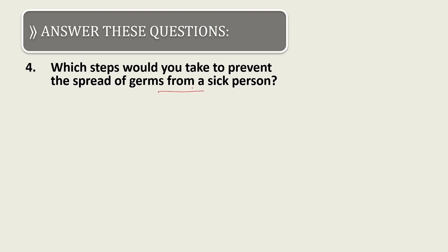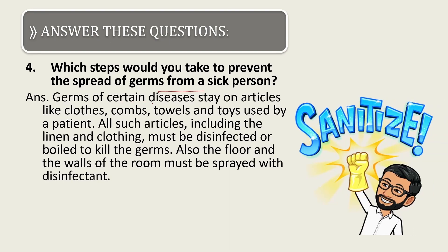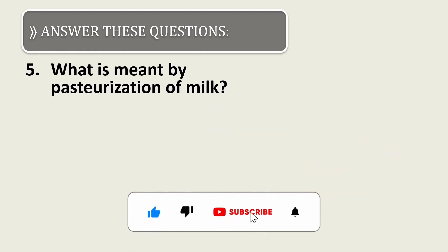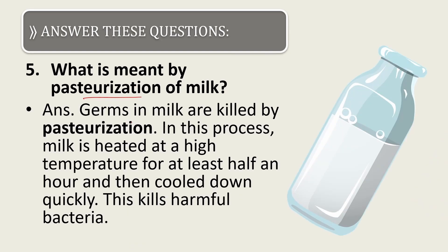Fourth long answer: which steps would you take to prevent the spread of germs from a sick person? Germs of certain diseases stay on articles like clothes, combs, towels, and toys used by the patient. All such articles including linen and clothing must be disinfected or boiled to kill the germs. The floor and walls of the room must also be spread with a disinfectant.